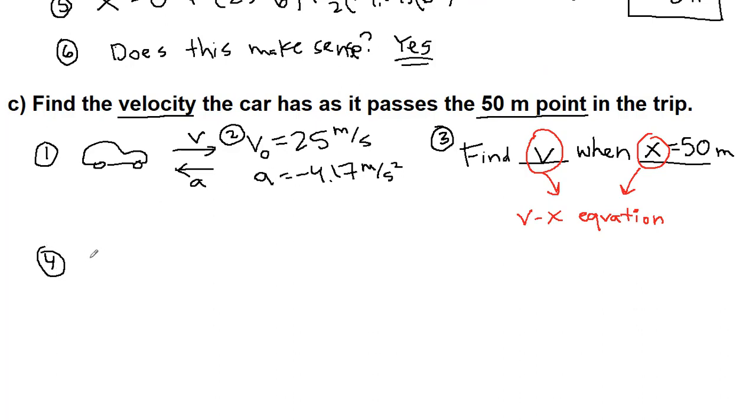So, step 4 is writing out the VX equation. All right. V is the thing we're looking for, so it stays a variable. The initial velocity was 25. That will be squared. Plus 2 times negative 4.17. Times our final X, which in this case is 50. It's in the wording of step 3. Minus our starting point of 0. You're going to see that a whole lot, pretty much every single problem for the horizontal motion, that we just start at 0 because we're going to count from that point.